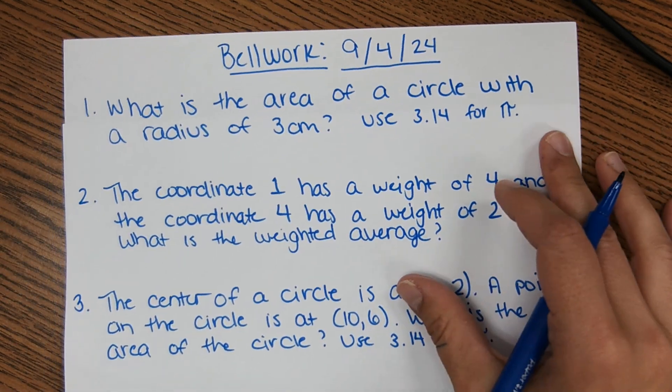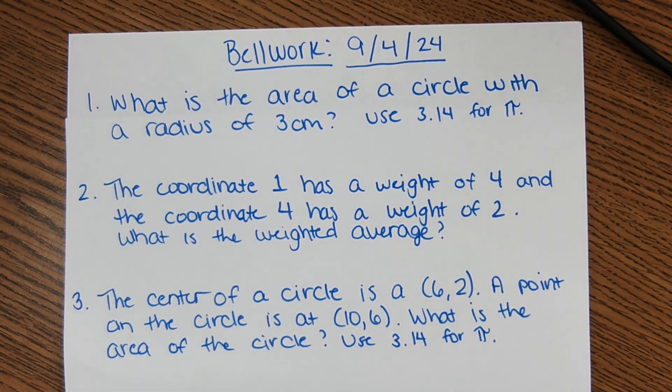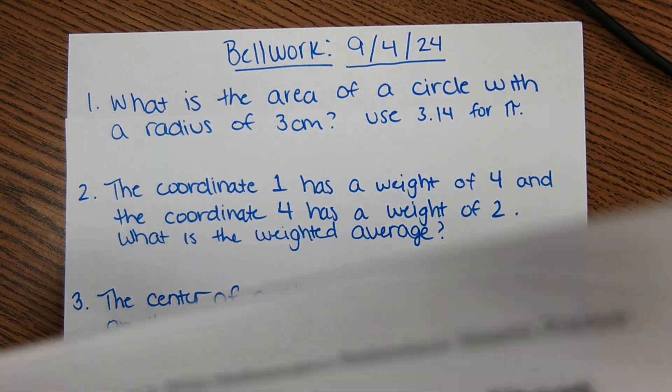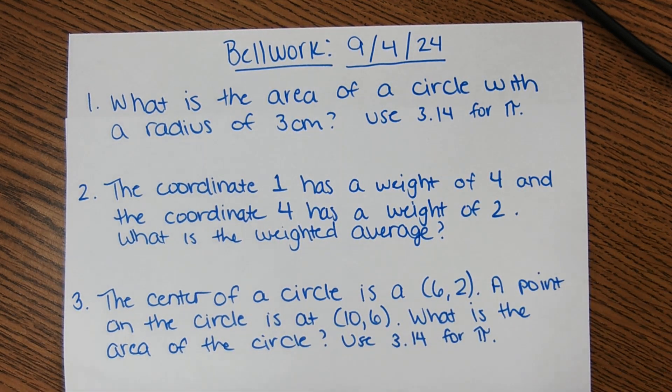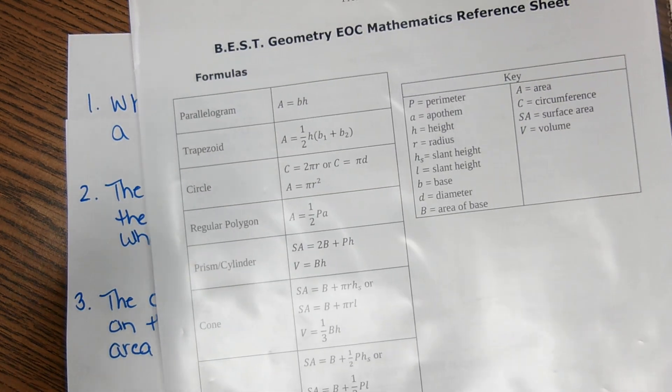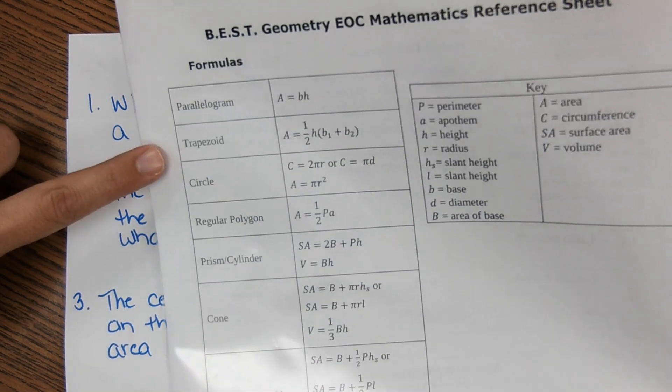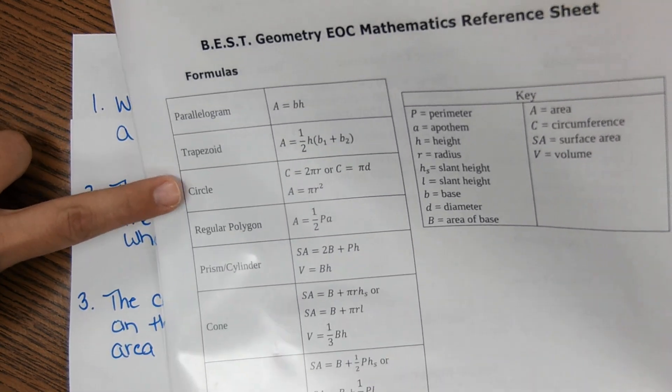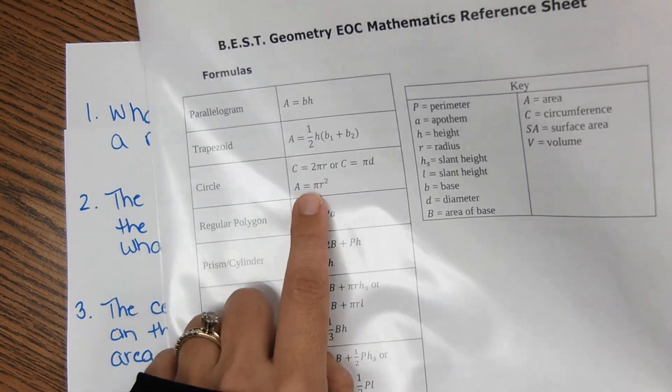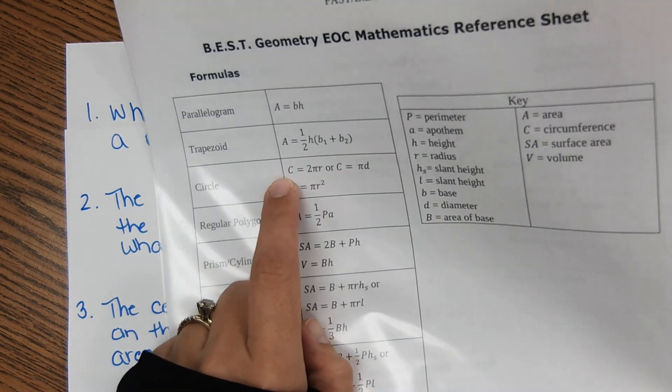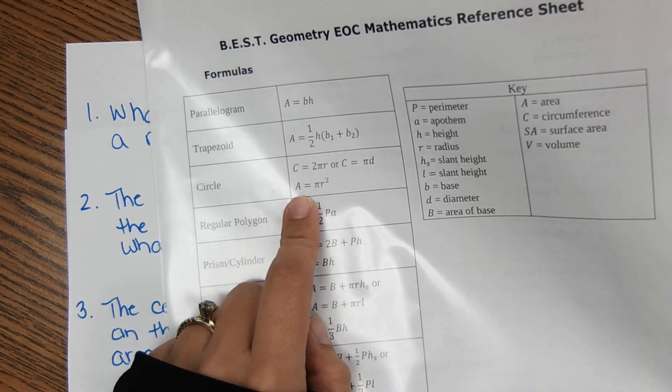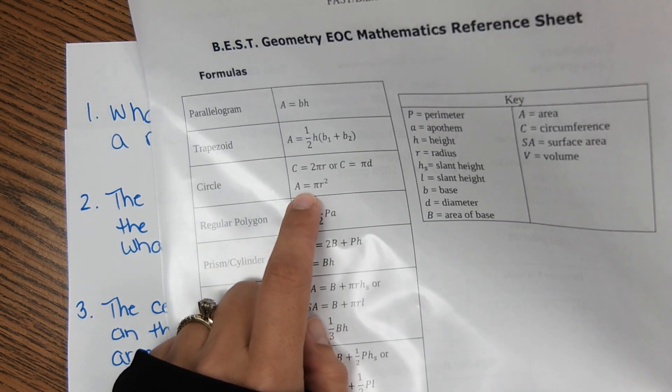And you use 3.14 for pi. So the first thing you'd have to do here is identify the equation for area of a circle. We worked with this yesterday, so you may have remembered that. It is also on the EOC reference sheet right here, which you have in your folder. You go to circle and then it has C for circumference, which we'll talk about that today. And then A for area, and that's your equation right there.